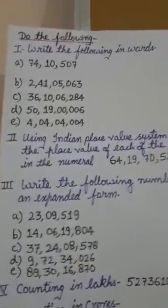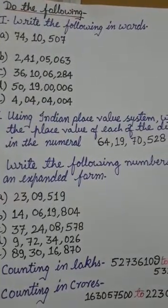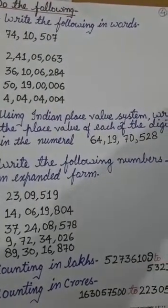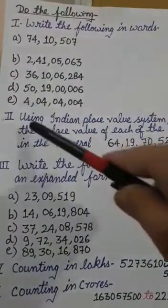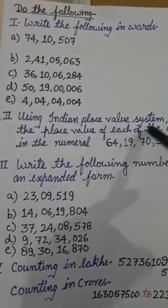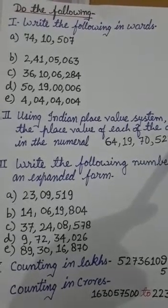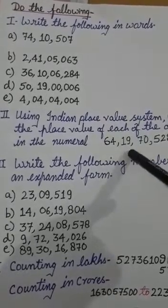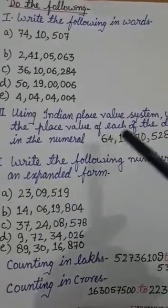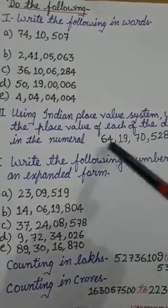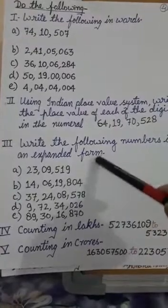Now let's do some practice questions. You can do these in any copy — practice copy or any copy you have. Question 1: write the following in words. Question 2: using the Indian place value system, write the place value of each digit in the numeral 64,19,70,528 — that is 64 crores 19 lakhs 70,528. Question 3: write the following numbers in expanded form.